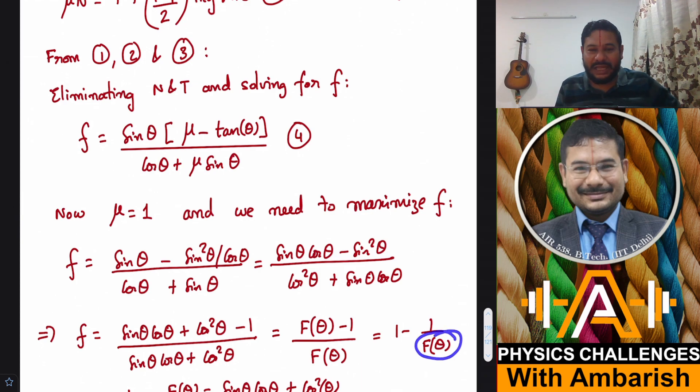So I just need to focus on now capital F of theta. If capital F of theta is maximized, automatically small f is maximized, because this is 1 minus something. The subtraction term should be minimum, that means the denominator should be maximized.